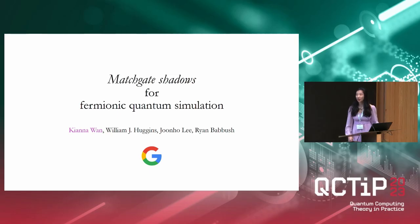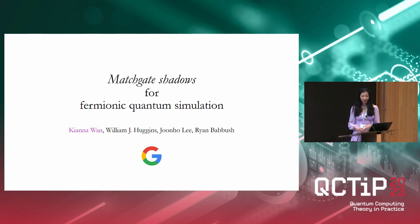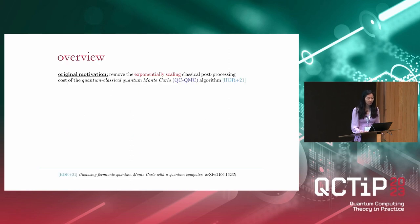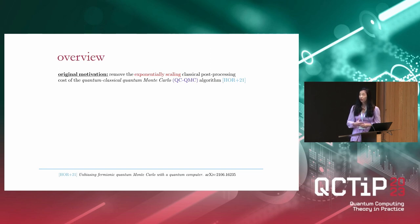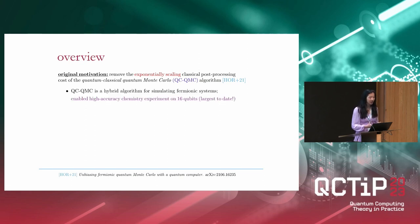Today I'll be telling you about some new protocols for estimating properties of fermionic systems, and we'll see that these protocols also come sort of hand in hand with some more general results that might be useful in other settings as well. This work was motivated by a very concrete, even urgent problem, which was an exponential scaling of an algorithm recently developed by my co-authors. They called this algorithm quantum-classical quantum Monte Carlo, or QCQMC for short. It's a hybrid quantum-classical algorithm for simulating fermionic systems, and they implemented it on the Sycamore processor in what was the largest chemistry experiment on a quantum computer so far.